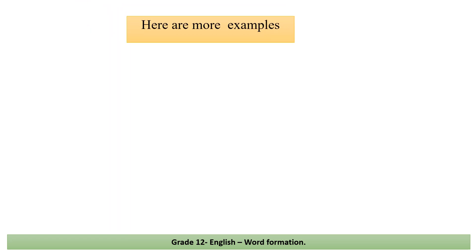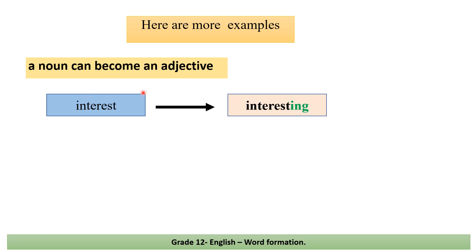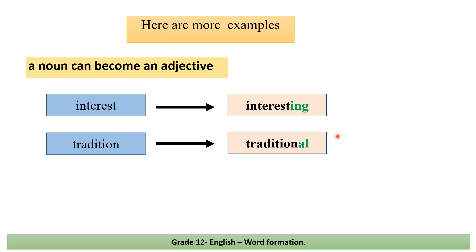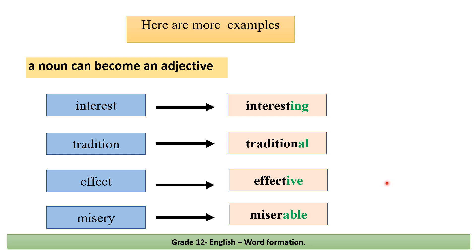Here are more examples. A noun can become an adjective. 'Interest' → 'interesting': we add '-ing'. 'Tradition' (noun) → 'traditional': we add the suffix '-al'. 'Effect' (noun) → 'effective': we add '-ive'. 'Misery' → 'miserable': we omit 'y' and add '-able'.